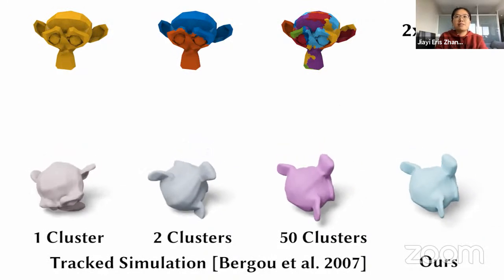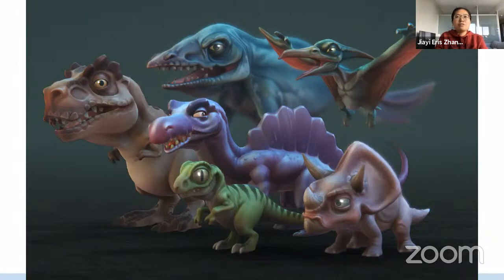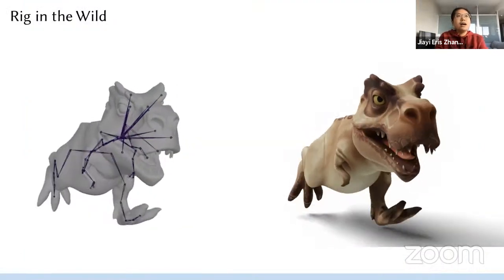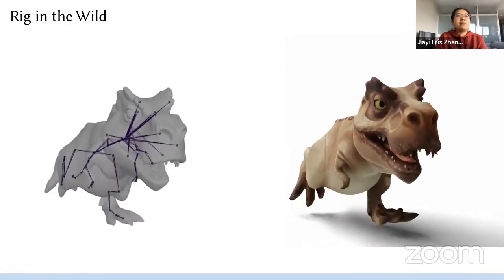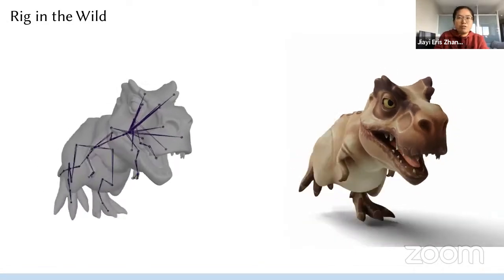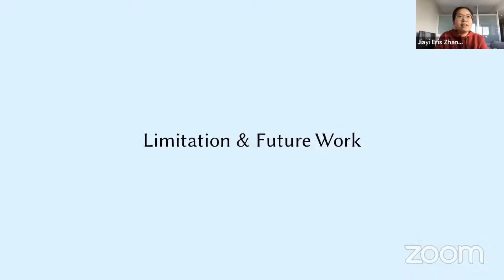And in the end, we also compare with tracking-based methods. Previous tracking-based methods need this segmentation, which means to get realistic motion, you need to babysit those segmentation of the original model. And you can see when there is only one cluster, it just completely fails to track the motion. While there are too many clusters, it's just almost rigid. And also we downloaded this dinosaur animation created by artists online. And show like such rig in the wild, which has 50 numbers of bones, our method can still find room to add secondary effects.